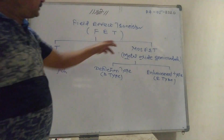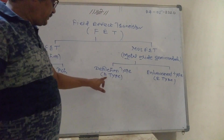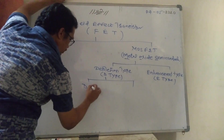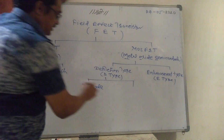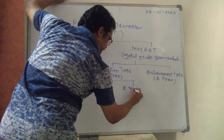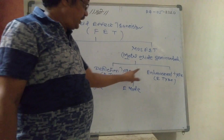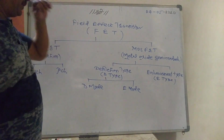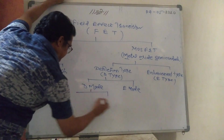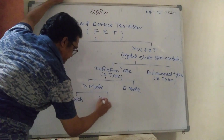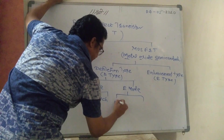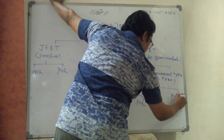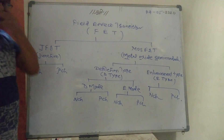There are two types of MOSFETs. D-type is operated in two different modes: Depletion-mode and Enhancement-mode. Depletion-type has two modes of operation — Depletion-mode and Enhancement-mode — and again each has N Channel and P Channel variants. This is the classic division of FET.